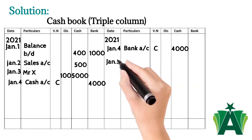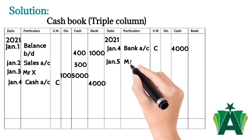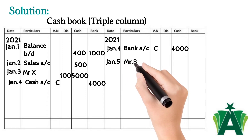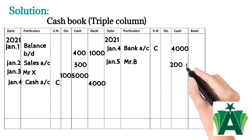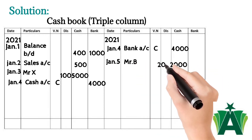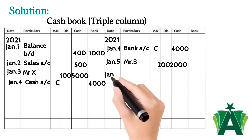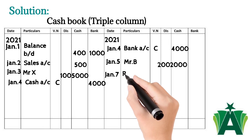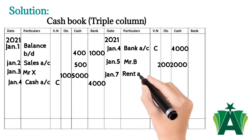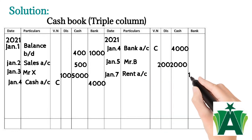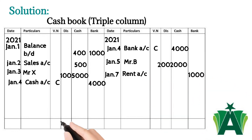January 5th — here three accounts are involved: Mr. B account, cash account, and discount received account. The $2,000 is recorded on the credit side of the cash book in the cash column, and $200 is recorded in the discount column with reference to Mr. B. January 7th — three accounts are involved: rent account is debit and bank account is credit. The $1,000 is recorded on the credit side of the cash book in the bank column with reference to rent account.